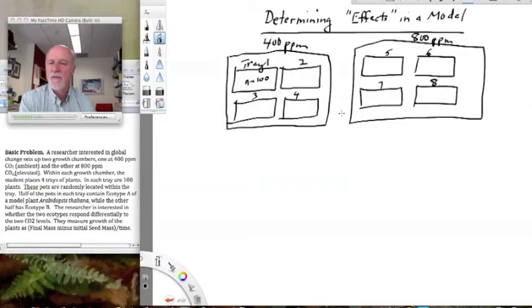Half of the pots in each tray contain ecotype A, and half of them contain ecotype B. And these, of course, would have to be randomly arrayed in here. So if we were to actually draw them in, we would see that they're intermixed, and that we are completely randomly randomizing within trays. And we would have an equal number, N equals 50 of ecotype A, and N equals 50 of ecotype B. So the same things are going on in these other trays.